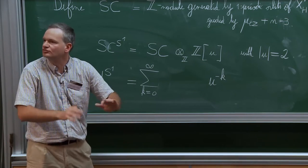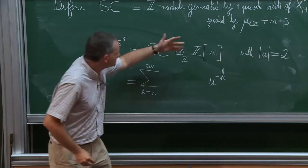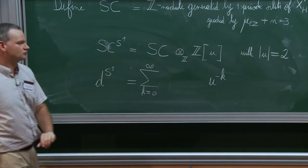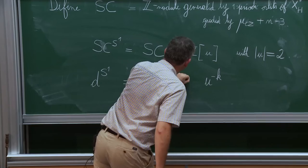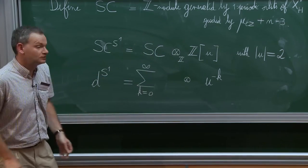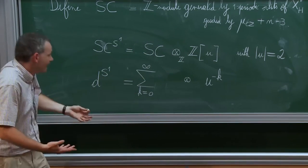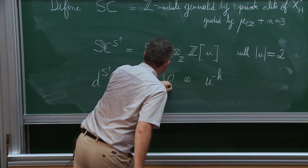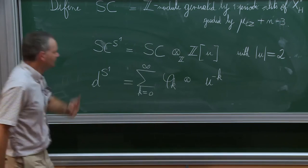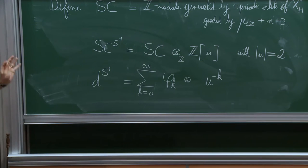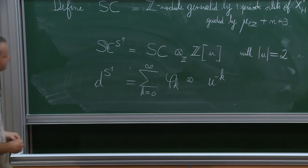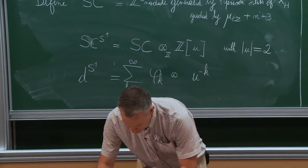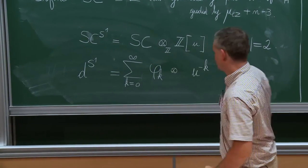On each factor, you act by some map φ_k. I will need more time to define what φ_k is, because it counts solutions of some moduli problem. That's the general form of the differential. The sum is effectively finite on any given element because lowering the degree of U by k kills any polynomial of degree less than k.